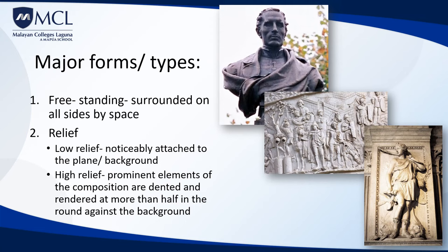The basic traditional forms of 3D art or sculpture are freestanding sculpture, which is surrounded on all sides by space, and relief sculpture, where the design remains attached to a background, typically stone or wood. Reliefs are classified according to the height of the figure's projection or its detachment from the background, and so relief sculpture may be classified as either low or high relief.